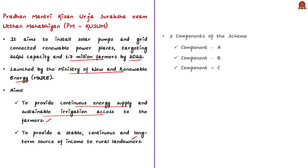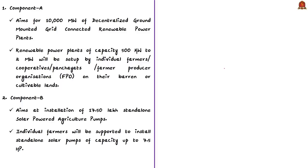The PM Kusum scheme has three components: A, B, and C. Component A aims for 10,000 megawatts of decentralized ground-mounted grid-connected renewable power plants. Under this component, renewable power plants of 500 kilowatts to 2 megawatts capacity will be set up by individual farmers, cooperatives, panchayats, or farmer producer organizations on their barren or cultivable lands. The power generated will be purchased by power distributing companies.